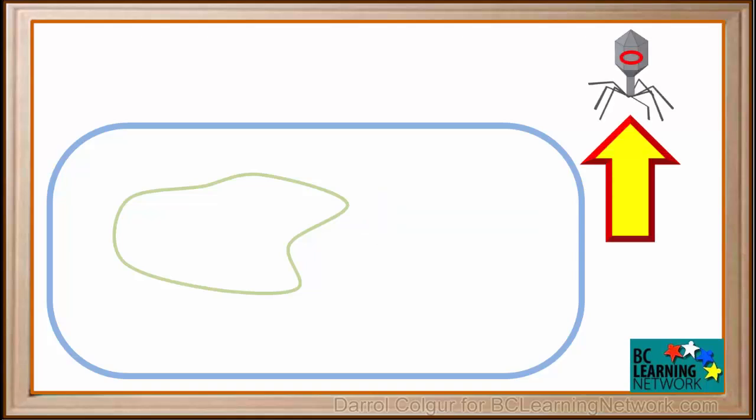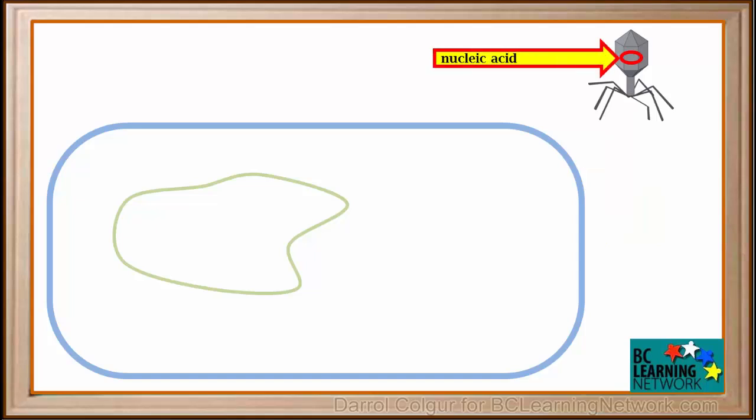Here is a virus called a bacteriophage. It needs to attach to a specific type of bacterial cell in order to replicate itself. Like all viruses, this one has its reproductive molecule inside, called nucleic acid, which can be either deoxyribonucleic acid, called DNA, or ribonucleic acid, called RNA. You will learn more about these in later biology courses.